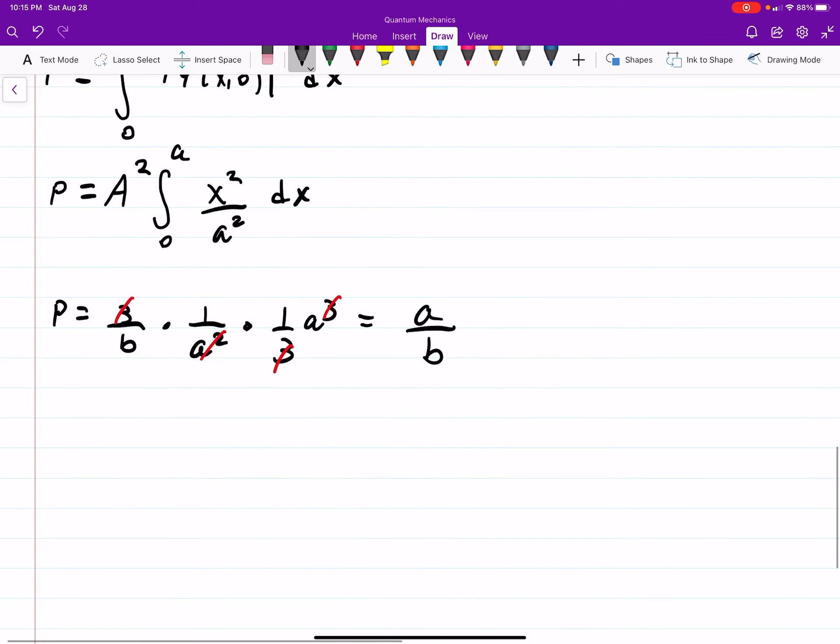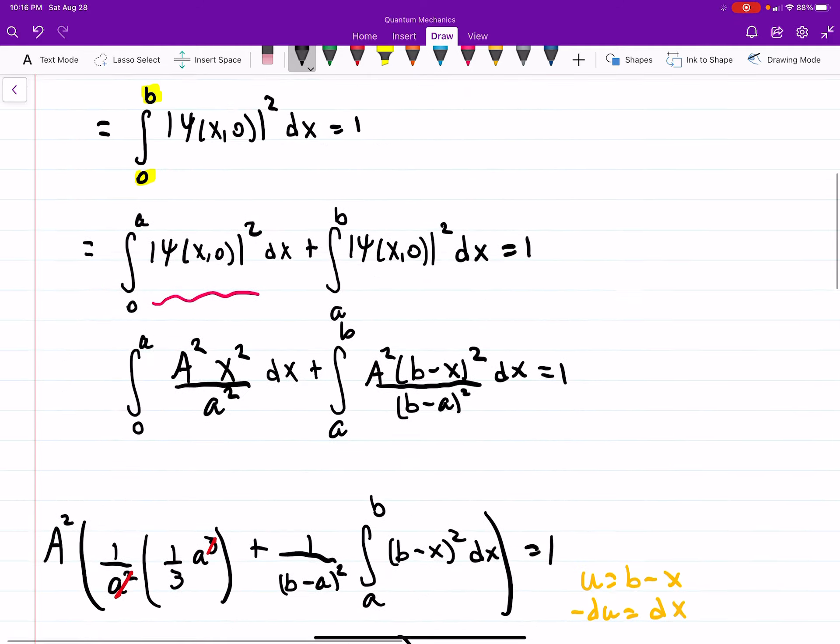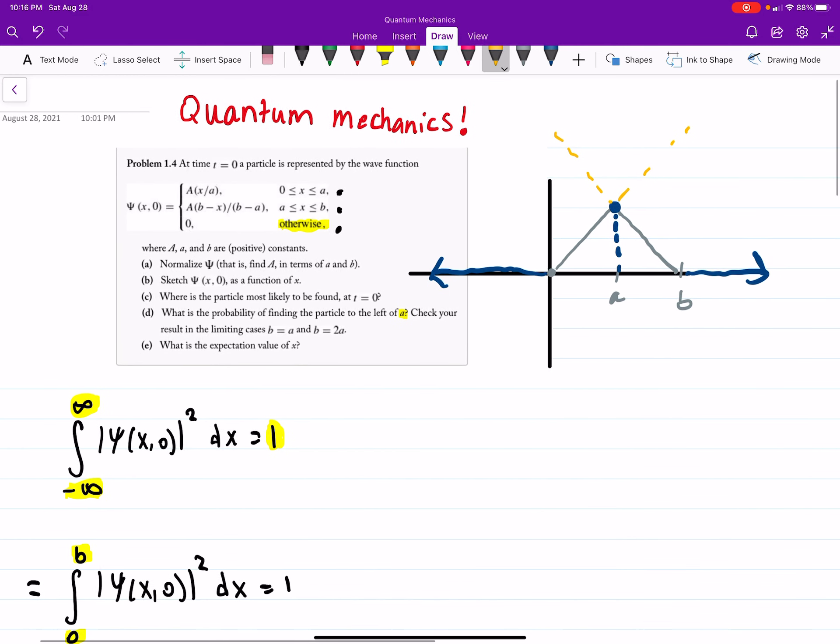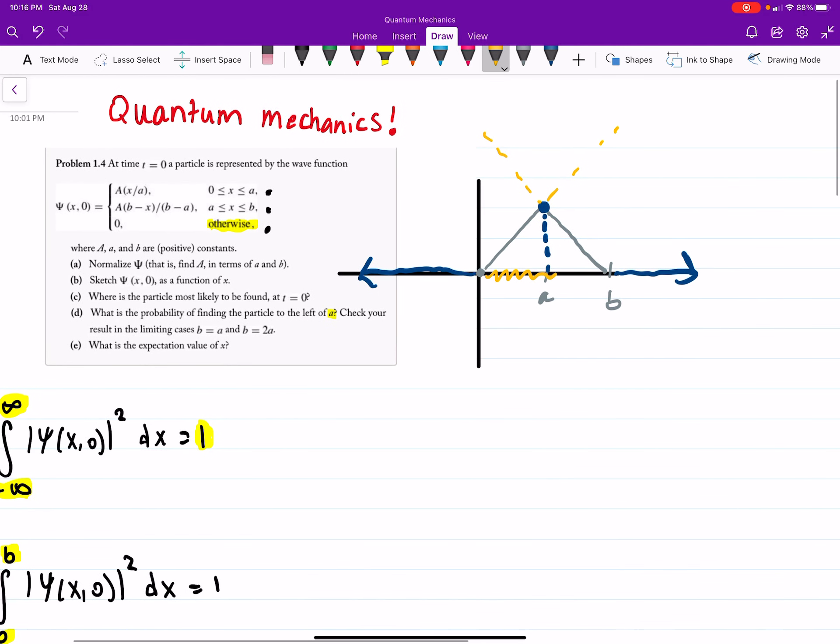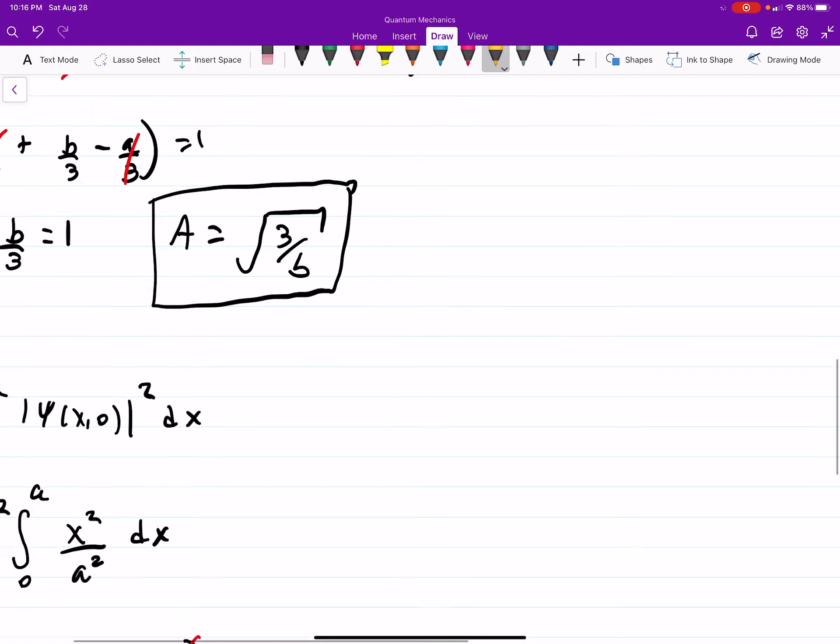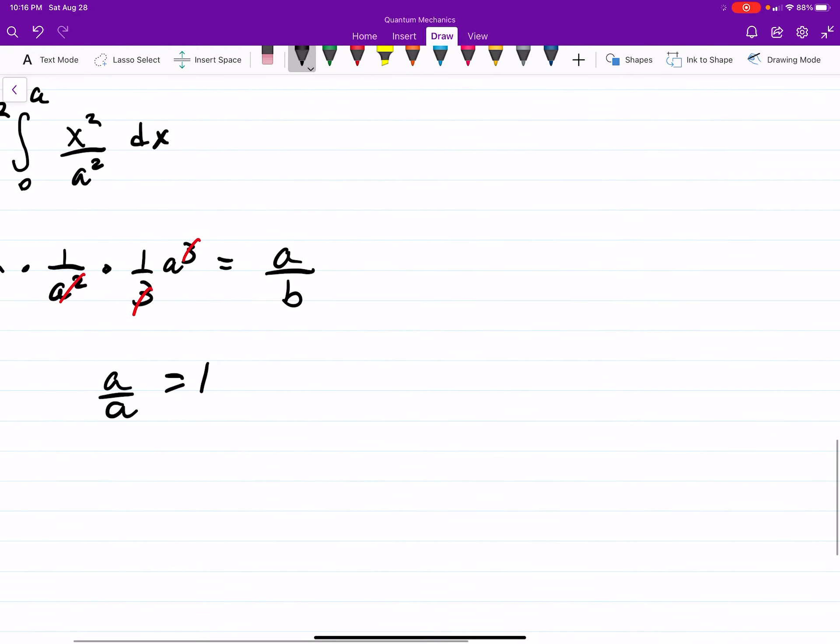Now we can take the extreme case. First one when b equals a. If a equals b or b equals a then you're just going to be dividing by the same number. So that's 100% probability that if you go as far if a is equal to b. In other words if we look over this whole region you'll find the particle which is obviously true. That's the only part of our graph that has area under the curve. So okay that's a good sign.